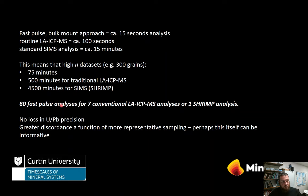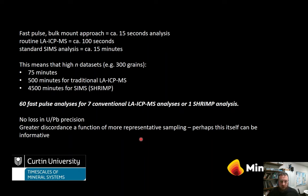That's 60 fast pulse analyses for every 7 conventional analyses or 1 SHRIMP analysis. We see no loss in U-Pb precision — it's highly comparable to other methods — and we've demonstrated it provides more representative sampling when combined with bulk mounting. The greater discordance is not a function of the technique itself but reflects better capture of the true geological diversity. Discordance data itself can be informative; in areas of higher fault density we see discordance go up, capturing extra geological information. We believe this is a powerful technique, better suited to detrital zircon work for fingerprinting sources and erecting stratigraphy. Thanks very much.